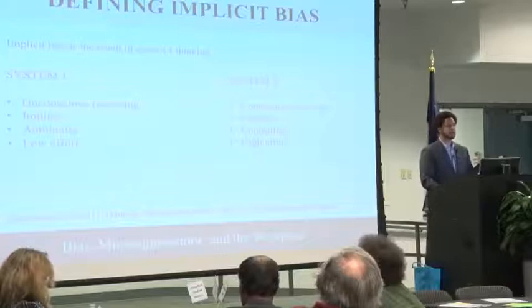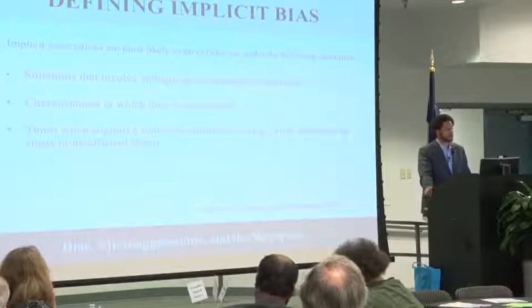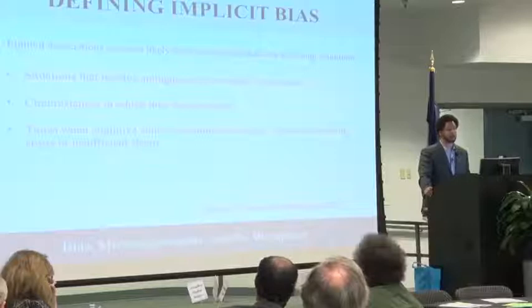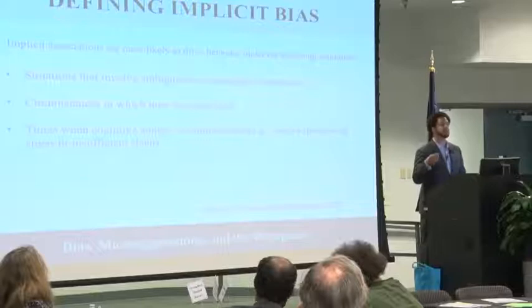There are specific characteristics of situations more likely to produce System One versus System Two thinking. Situations where information is incomplete or ambiguous, circumstances in which our time is constrained, or times when our cognitive control is compromised — experiencing stress or insufficient sleep. That describes the life of most educators and most people who work in any type of social institution. So we know we're pretty likely to see System One thinking be manifested, and we can't be surprised that microaggressions are a pervasive and normal part of our daily lives.